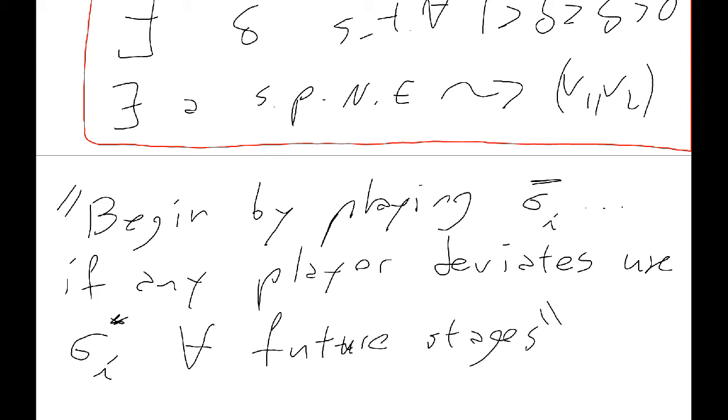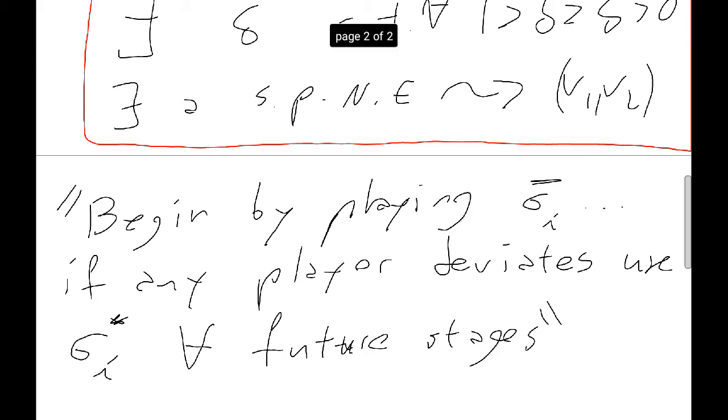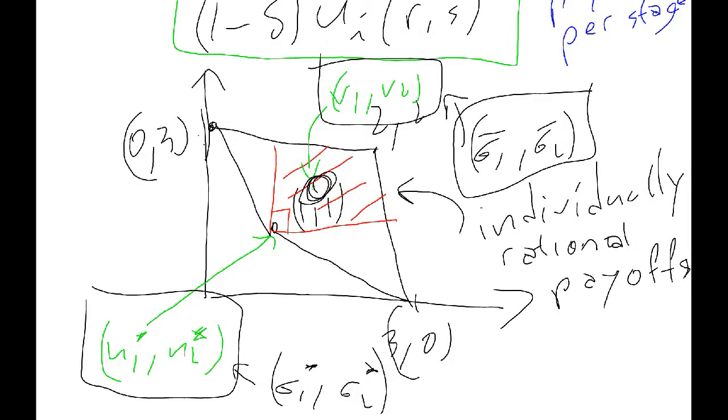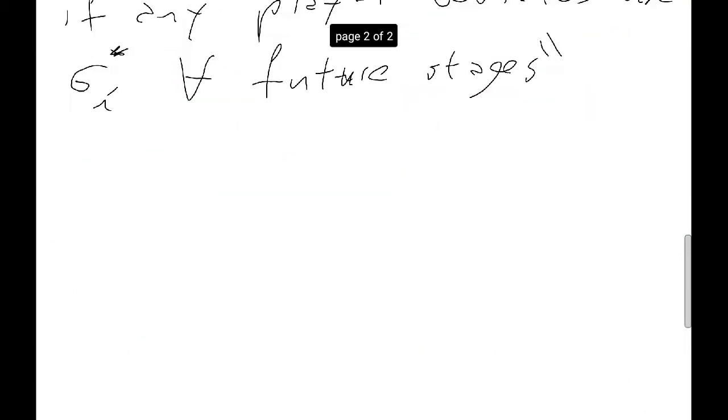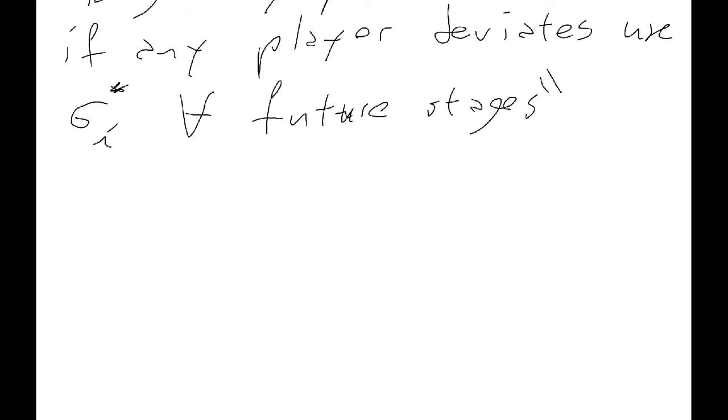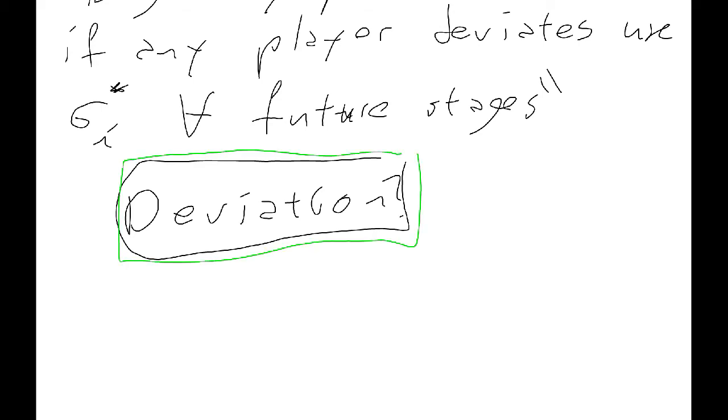So now what we want to do is just do a little bit of basic arithmetic. So let me just go back to this picture. So what we're saying is, start off by playing sigma 1 bar, sigma 2 bar, so that we are at this point here. I know this is getting a bit messy now. If anyone at any point deviates, then just move to here. So, is there any point for deviation? Big question mark there. Is there any point to deviate? Alright, that's what we're now going to check. So, if both players are playing that, it's any player wanting to deviate.